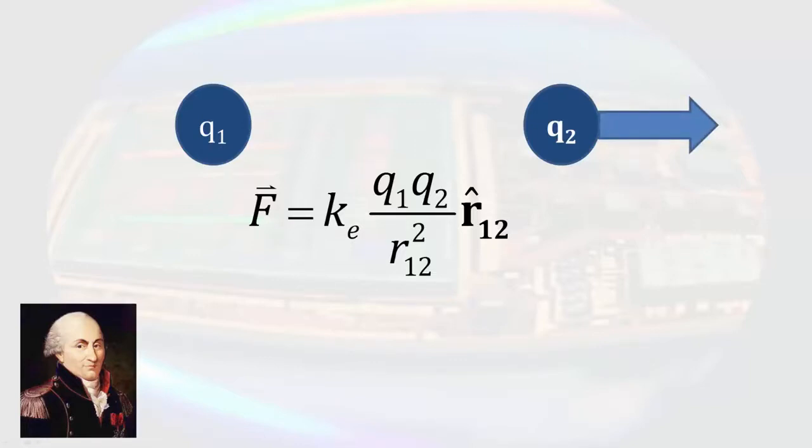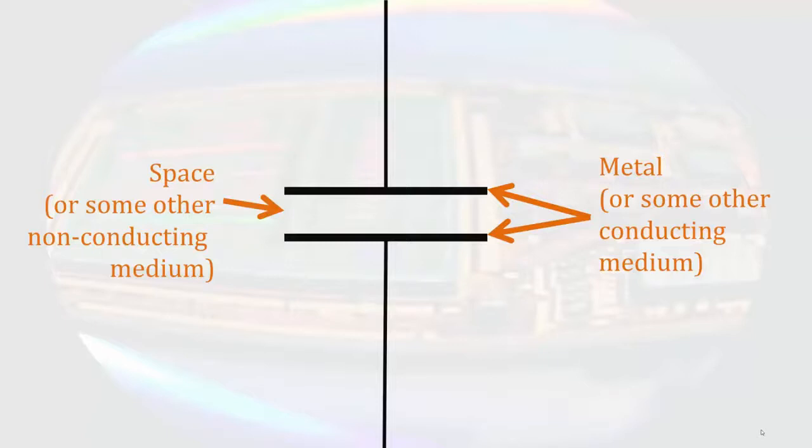Now let's consider a situation where we have two conductors separated by a space. If we placed a positive charge on the top plate and a negative charge on the bottom plate, there would be an attractive force between them. However, because the charges are in a material and there is a space between them, they would not actually be able to move toward each other.